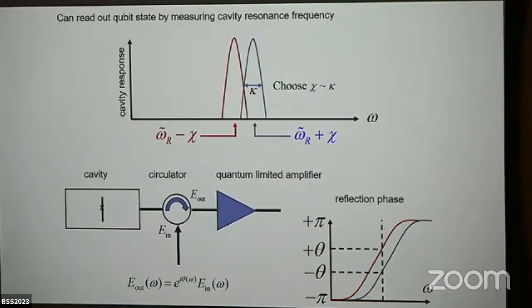In the not-strongly-dispersive regime where the splitting is on the order of the linewidth, the reflection phase changes by a total of 2π (π in transmission) as you go through the resonance. Where is the resonance? It depends on the state of the qubit. When the qubit is in the ground state it's one curve, excited state it's another. Sitting right at the bare resonance frequency ω_r, you see two different phase shifts, +θ and −θ, depending on the state of the qubit.